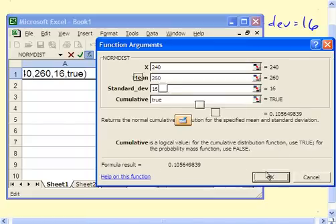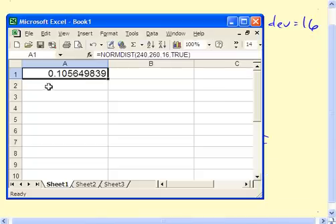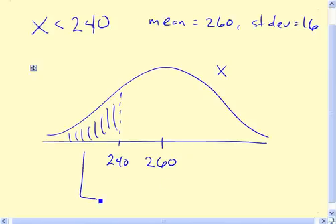But instead of trying to read it there, let's stick it back in the spreadsheet. It turns out to be 0.1056. So 10.56%. And remember, that's 10.56% of pregnancies are less than 240 days. So there's the answer right there. That's one method of solution.